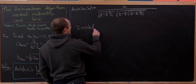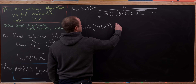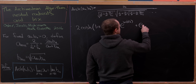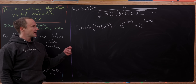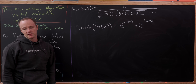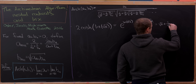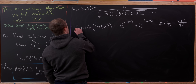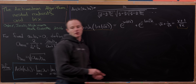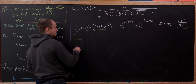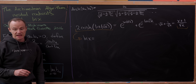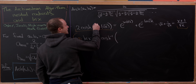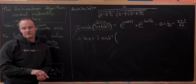Let's observe that 2·cosh(ln(√x)), by the definition of hyperbolic cosine, gives e^{ln(√x)} + e^{-ln(√x)}, which simplifies to √x + 1/√x = (x+1)/√x. We can take this equation — 2·cosh(ln(√x)) = (x+1)/√x — and solve for the natural log, using the fact that ln(√x) = (1/2)·ln(x) by logarithm rules, giving ln(x) = 2·cosh⁻¹((x+1)/(2√x)).